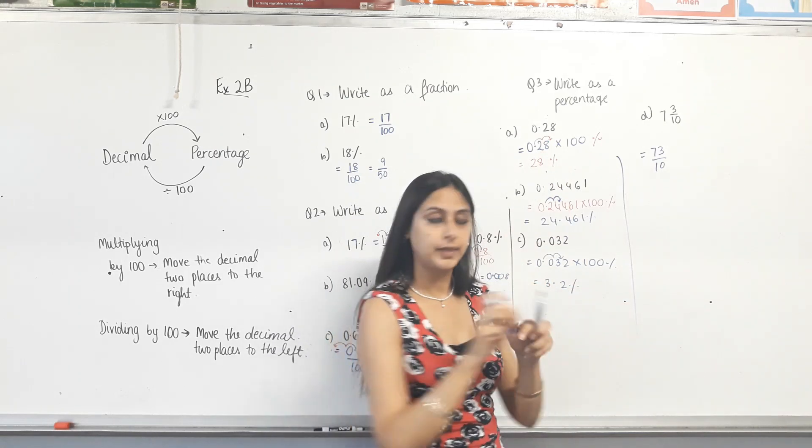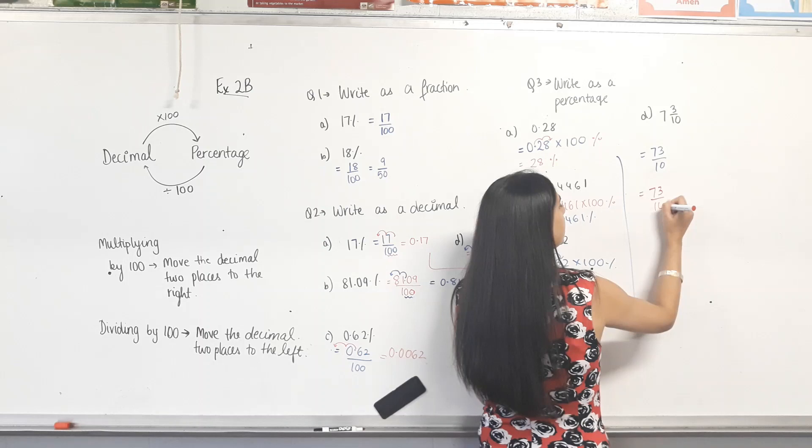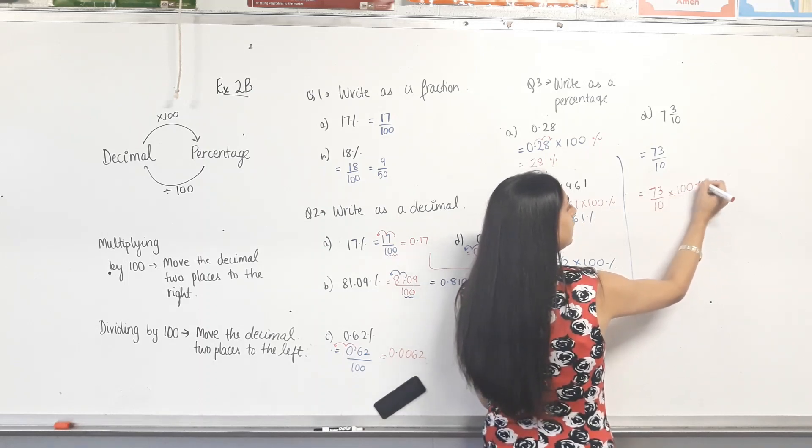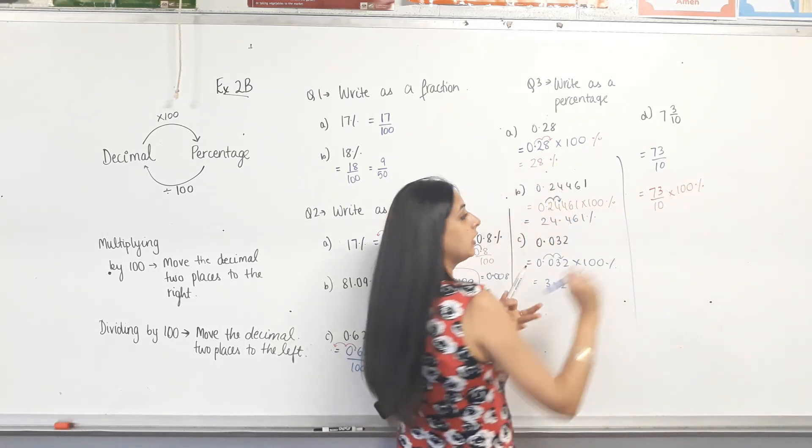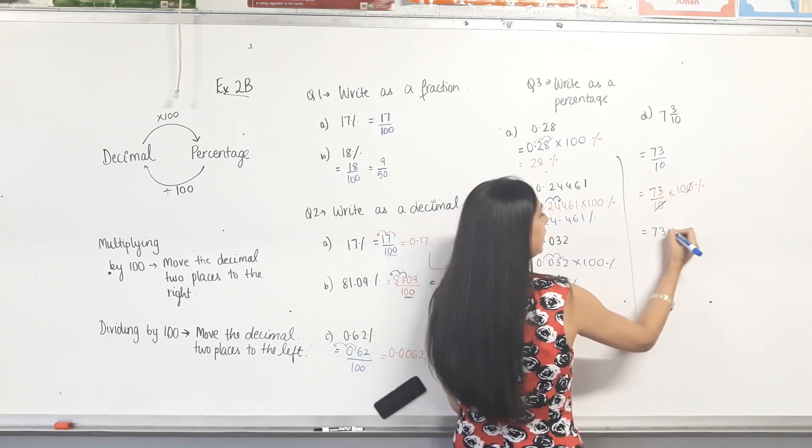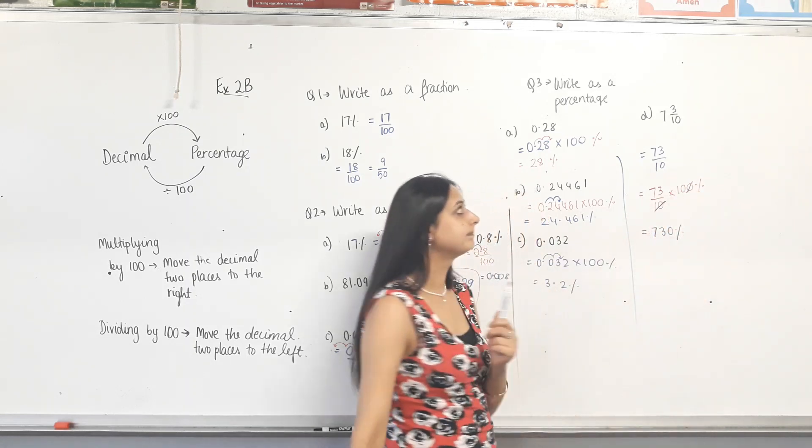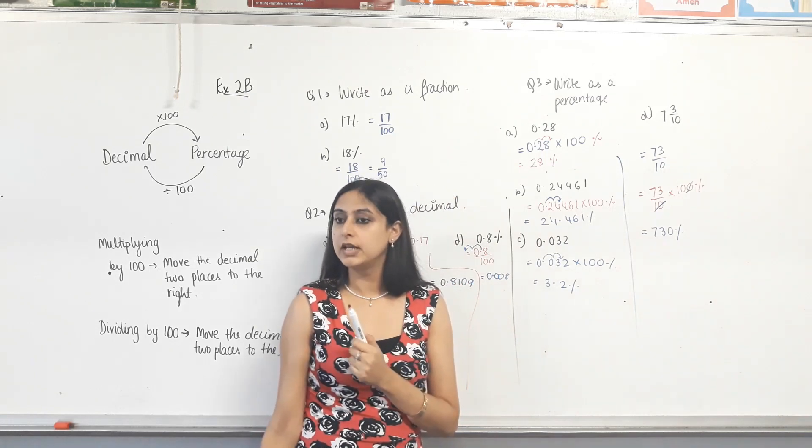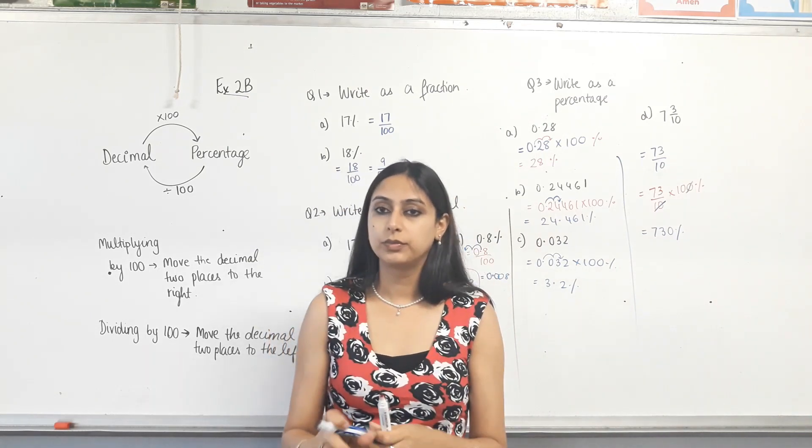So, next step. 73 over 10 times 100 and then percent. Can I divide both by 10? Yes. So, 73 over 1 times 10, which is 730 percent. Make sense? That's it. Two weeks done for you. Get on with the work.